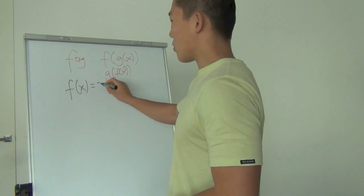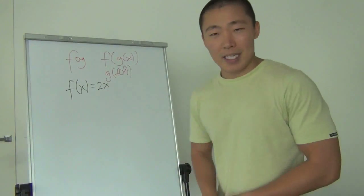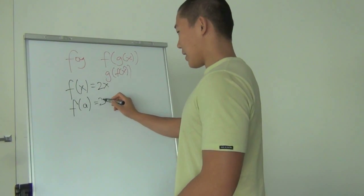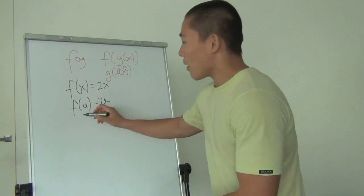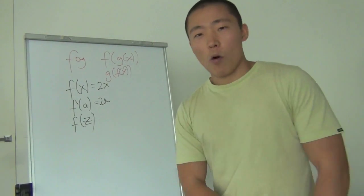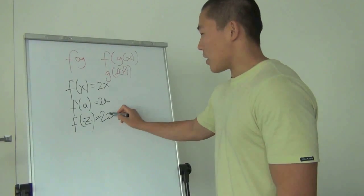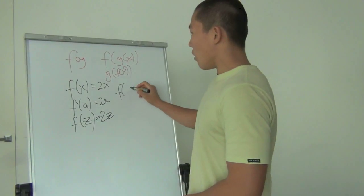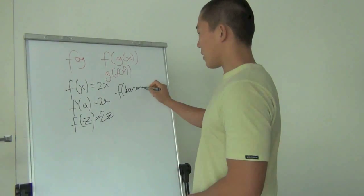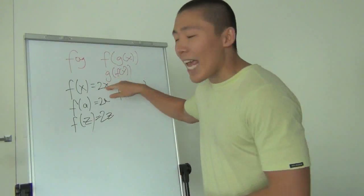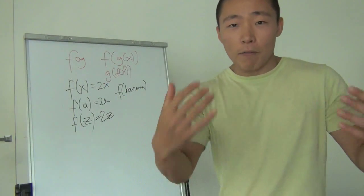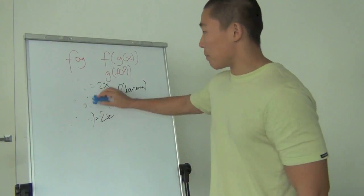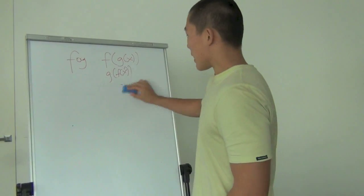Here's a simple example: f(x) = 2x. What happens if I go f(a)? Any idiot would say it's 2a. What about f(z)? It's 2z. What about f(banana)? It's 2 banana. You just replace the x with whatever is inside the brackets of f — that's it. So when you have g(x) to replace, you're just substituting g(x) in.